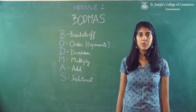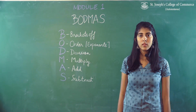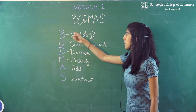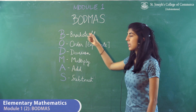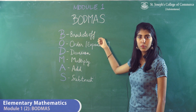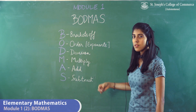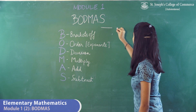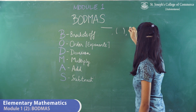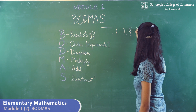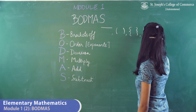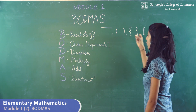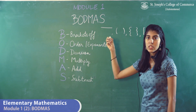The second topic under module 1 is BODMAS. Under BODMAS, B stands for brackets off. When you're removing the brackets, we need to start off with the bar bracket, move on to the curved bracket, then the flower or curly bracket, and end with the square bracket. This is the order you need to follow while removing the brackets.